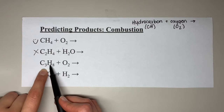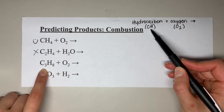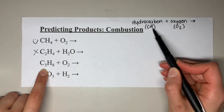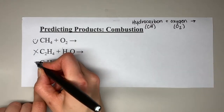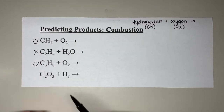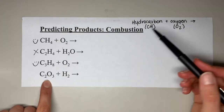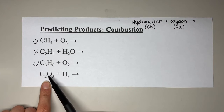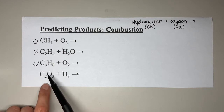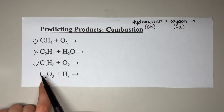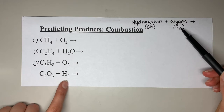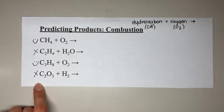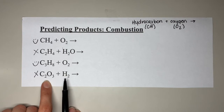The third one: C3H8 — is that a hydrocarbon? Yes, carbon and hydrogen make up a hydrocarbon. Is it reacting with oxygen? Yes. So this is also a combustion reaction. The last one: C2O3 — is that a hydrocarbon? No, it does not contain hydrogen with that carbon. So we can stop right there — this is automatically not a combustion reaction. There's also no oxygen gas by itself in the reactants, so this would be more like a single replacement reaction.